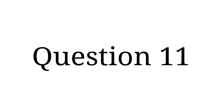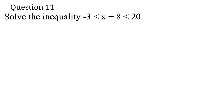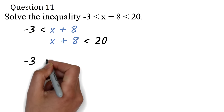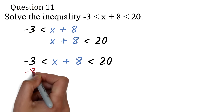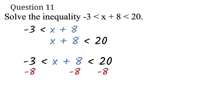Question 11: Solve the inequality negative 3 less than x plus 8 less than 20. Here we are looking at combined inequalities. This is the same as negative 3 less than x plus 8 AND x plus 8 less than 20 — we just combine them. The solution process is the same, but instead of two sides you now have three sides. To get x by itself, we subtract 8 from all three sides. The 8 cancels out. Negative 3 minus 8 is negative 11, and 20 minus 8 is 12. So our answer is negative 11 less than x less than 12.